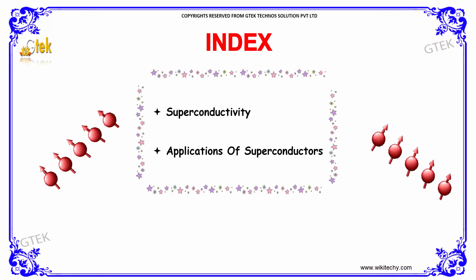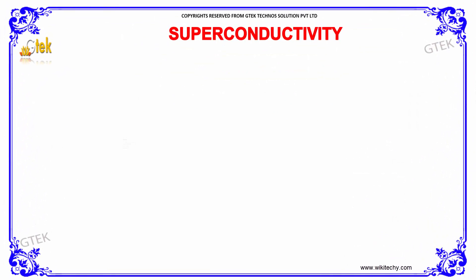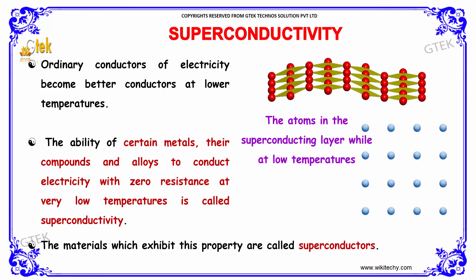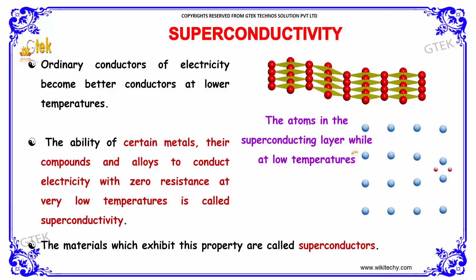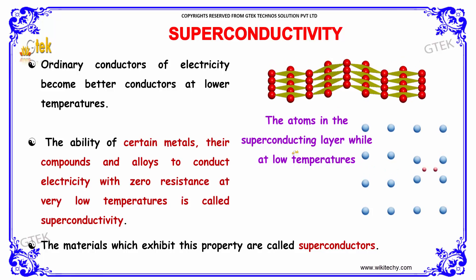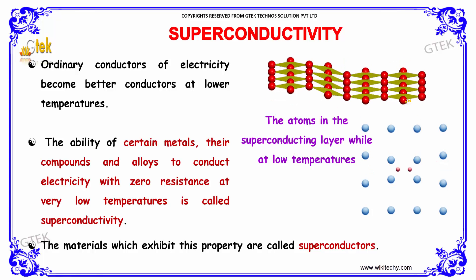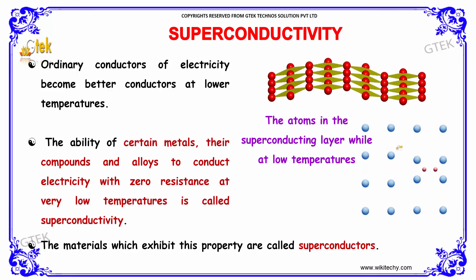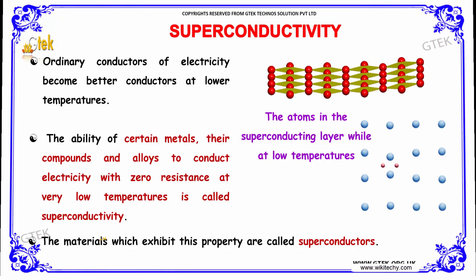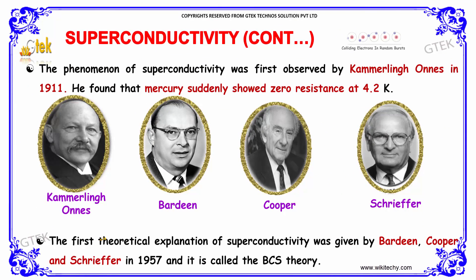What is superconductivity? Ordinary conductors of electricity become better conductors at low temperature. The ability of certain metals, their compounds, and alloys to conduct electricity with zero resistance at very low temperature is referred to as superconductivity. The materials that exhibit this property are called superconductors, and the concept is called superconductivity.